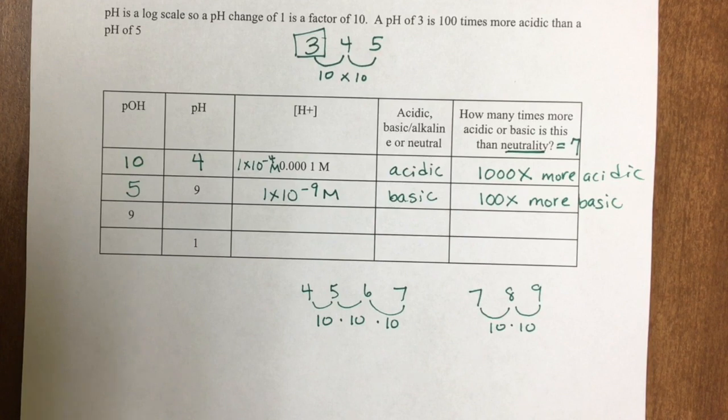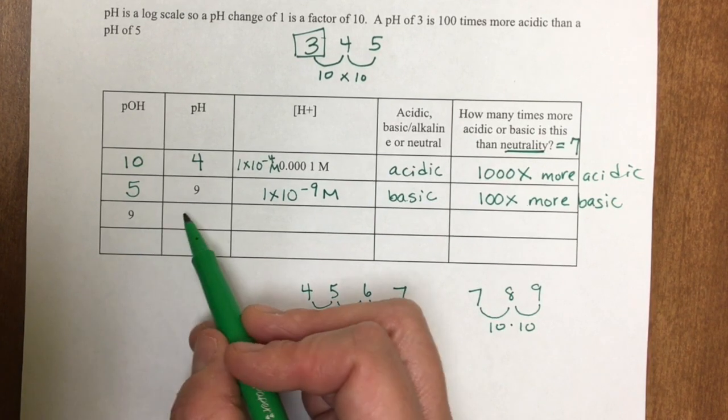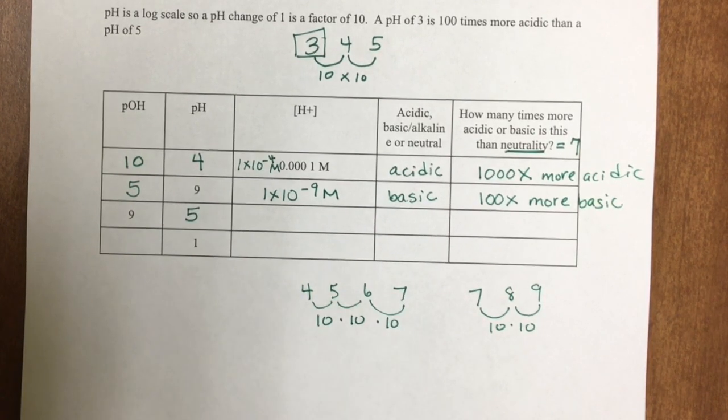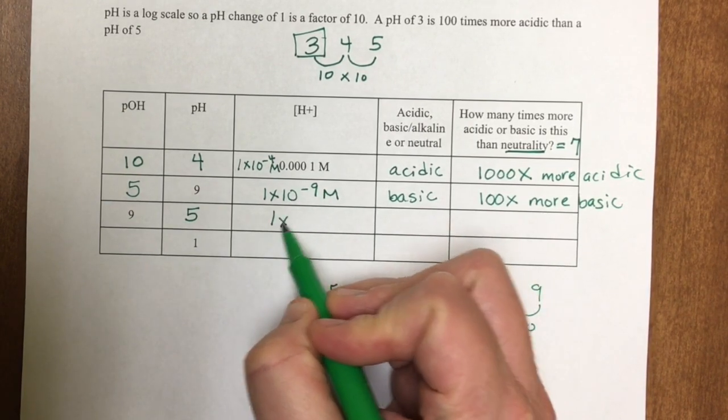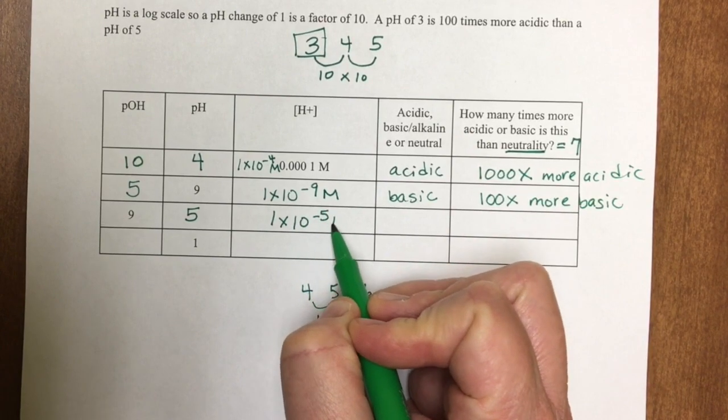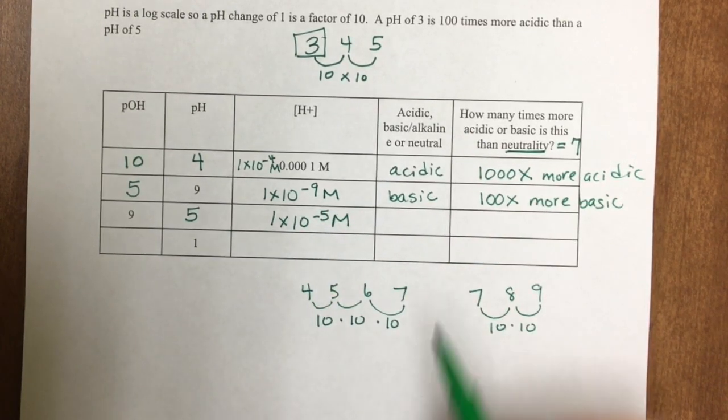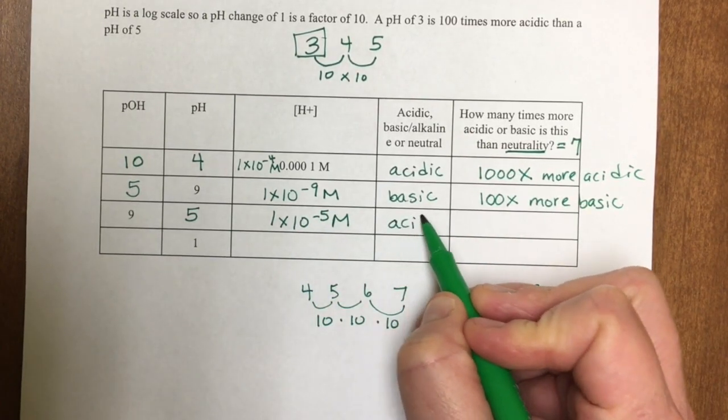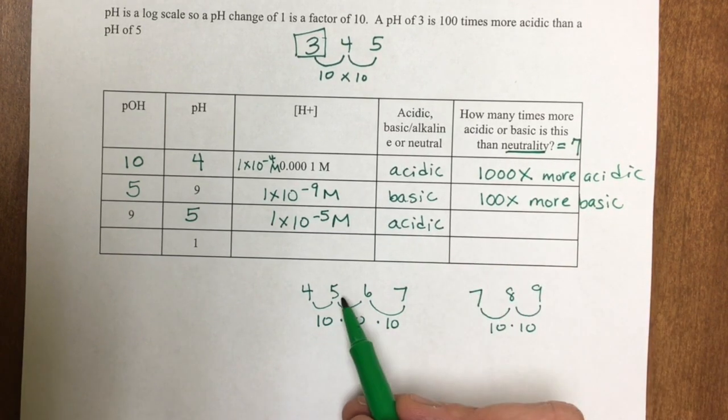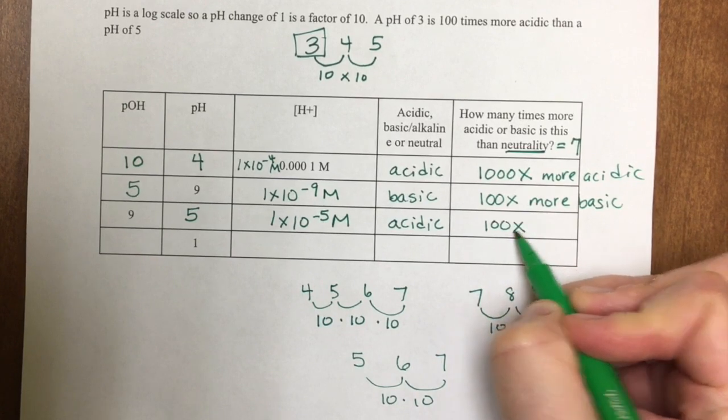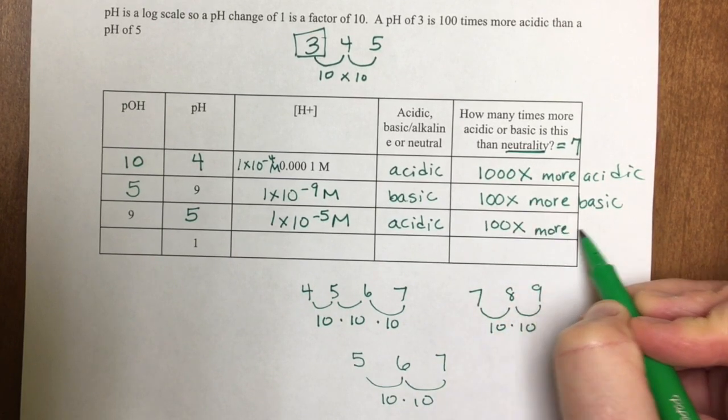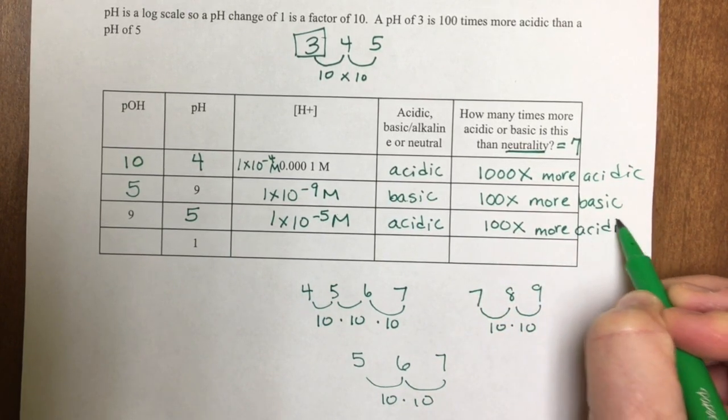Next problem is pOH of 9, so my pH is 5, because 9 plus 5 is 14. Hydrogen ion concentration is 1 times 10 to the minus 5 molarity. pH is less than 7, so it is acidic. To go from 5 to 6 to 7 is 10 times 10, so it's 100 times more acidic than neutrality.